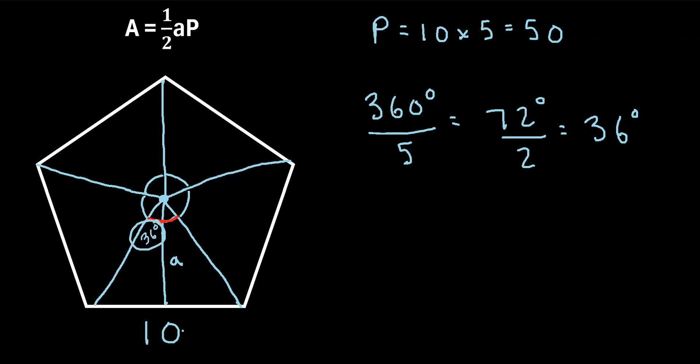So if we know this angle, and we know this side length, and we recognize that this is a right triangle, we can figure out what this apothem length is by using a little trigonometry. So if you recall the acronym SOHCAHTOA, this says the tangent of an angle can be calculated by taking the opposite side divided by the adjacent side.